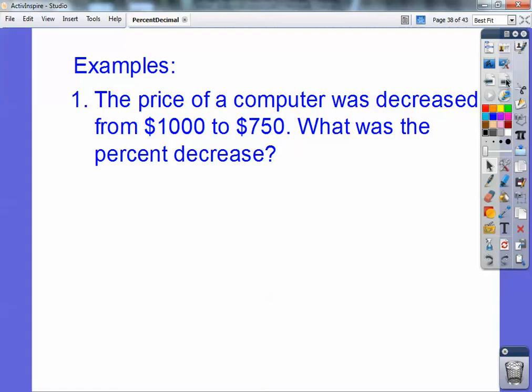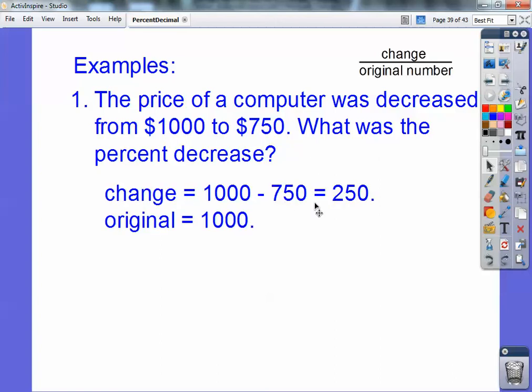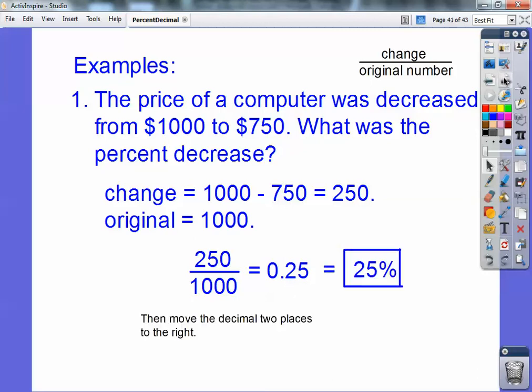I have a couple examples. The price of a computer was decreased from 1,000, that's my starting number, my original number, to 750. So the change would be the difference of those guys, so subtract them. So what's the percent decrease? It's going to be change divided by original number, so the change is 250. The original number is 1,000, so 250 over 1,000. Actually, these cancel right here, and 25 over 100 is 0.25. So 0.25, then move the decimal two places to the right, so it becomes 25%. So it was 25% decrease.